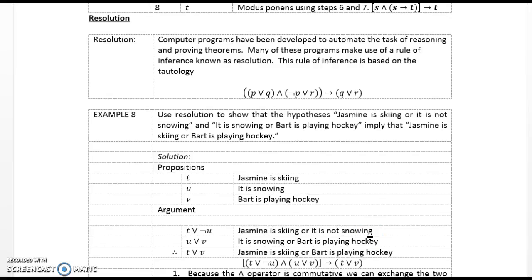Resolution. Computer programs have been developed to automate the task of reasoning and proving theorems. Many of these programs make use of a rule of inference known as resolution. This rule is based on the tautology: (P or Q) and (not P or R) implies (Q or R).